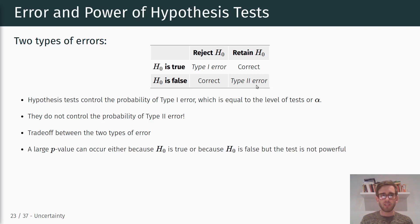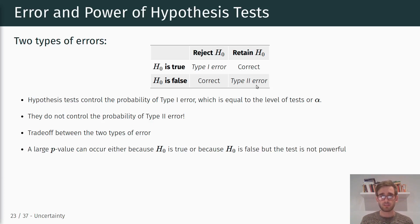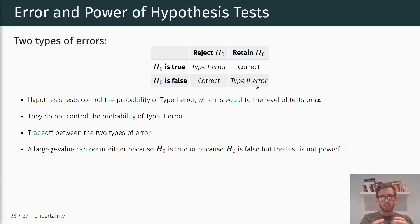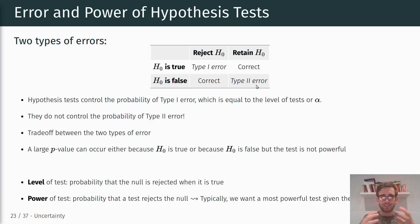A large p-value can occur for two different reasons: either the null hypothesis is true, which is why it's very likely we'd observe the test statistic we did in our sample, or the null hypothesis is false but the test is not very powerful, giving us a high likelihood of making a Type II error. This likelihood of falsely retaining the null hypothesis — failing to reject the null even though it is actually false — is what we call the statistical power of a test.